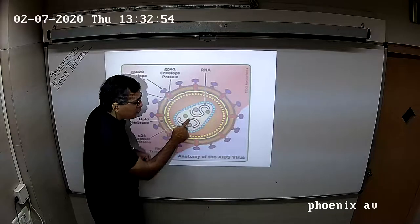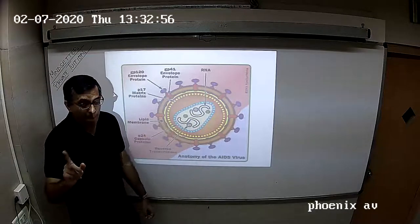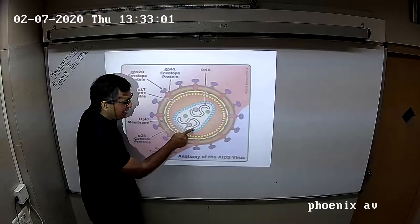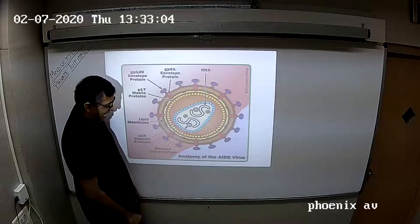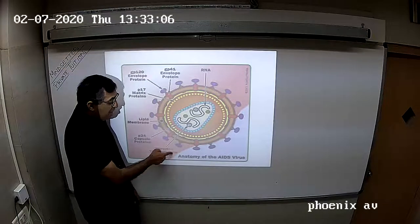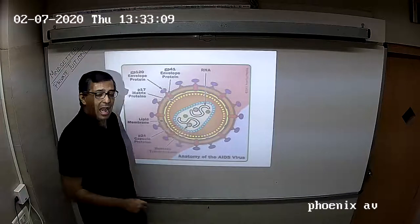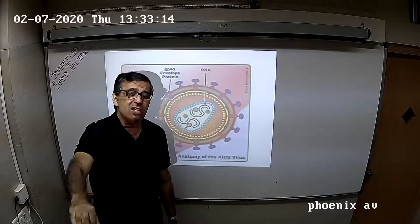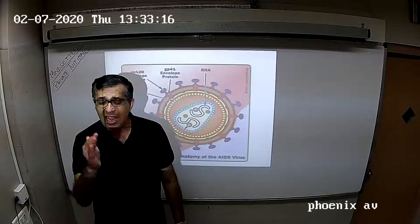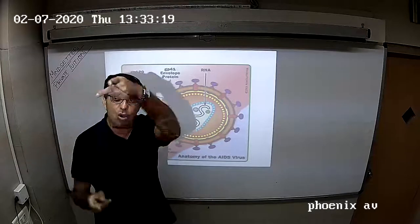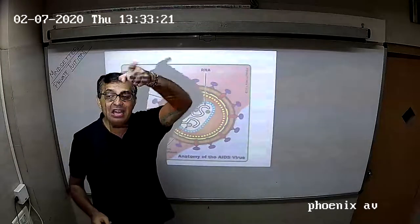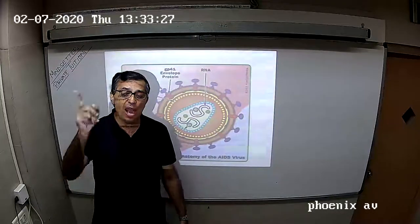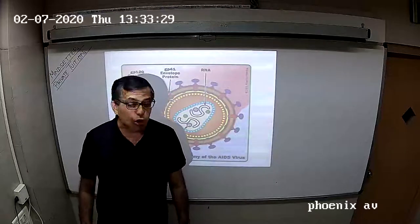Inside the lipid and protein layers, HIV contains two strands of RNA - not DNA, but two strands of RNA. Also present inside is the enzyme reverse transcriptase. Remember, reverse transcriptase does the reverse of transcription - it converts RNA into DNA, then DNA replicates, and DNA is again converted into RNA. That is why these viruses are called retroviruses.